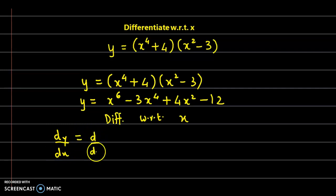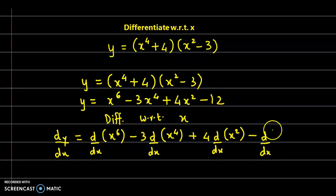First would be derivative of x raised to 6, minus 3 times derivative of x raised to 4, plus 4 times derivative of x square, minus derivative of constant term, that is derivative of 12.